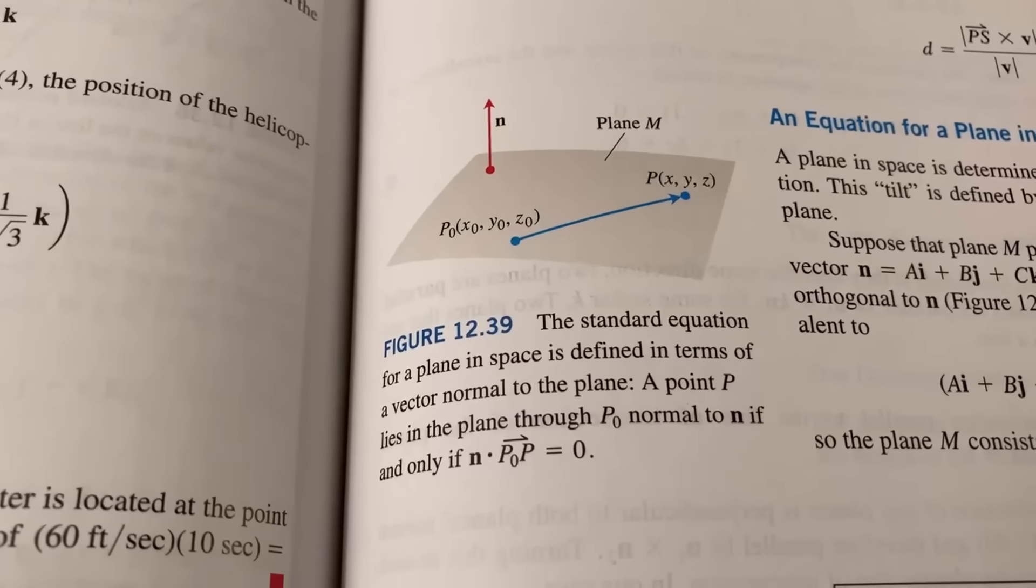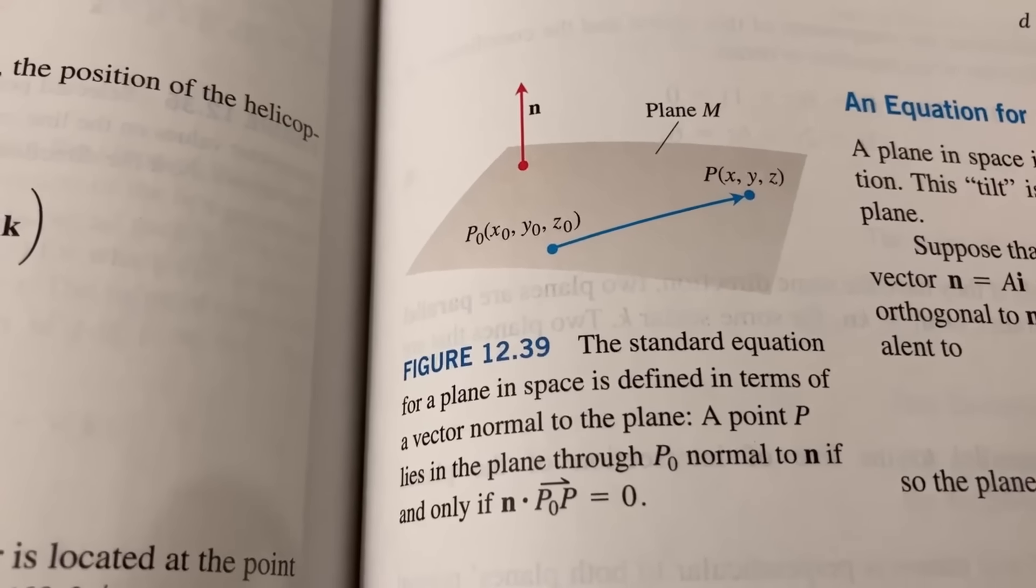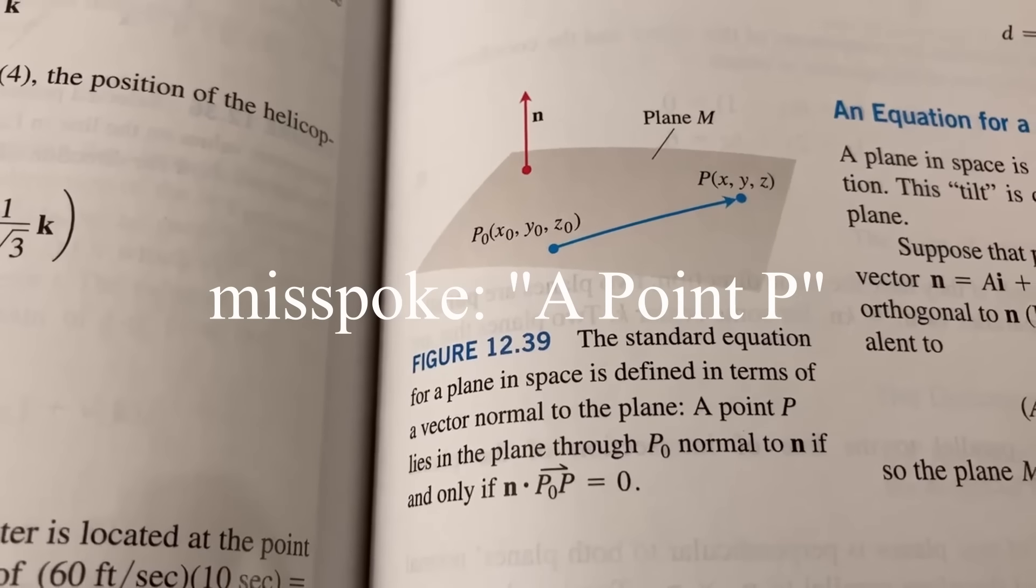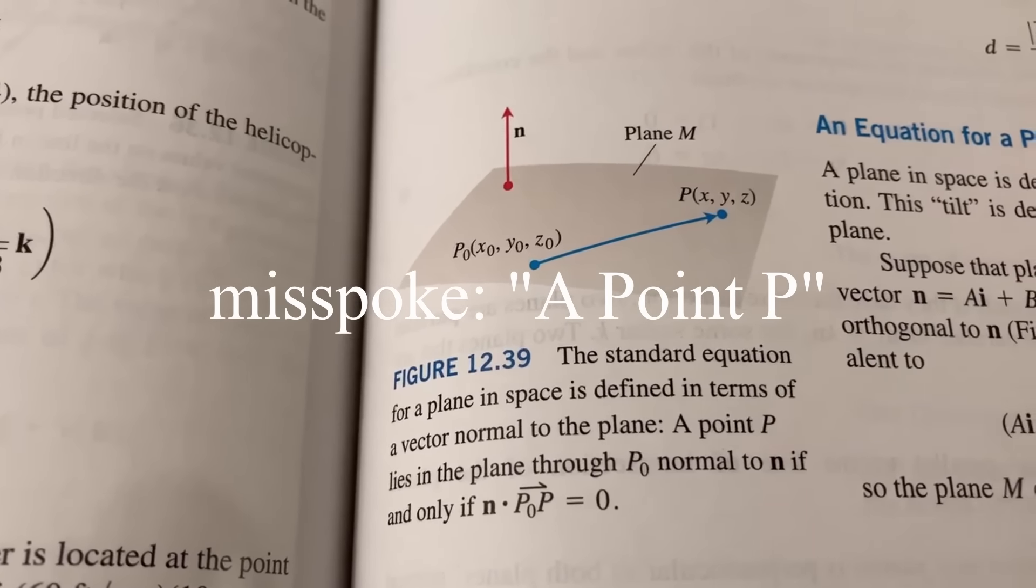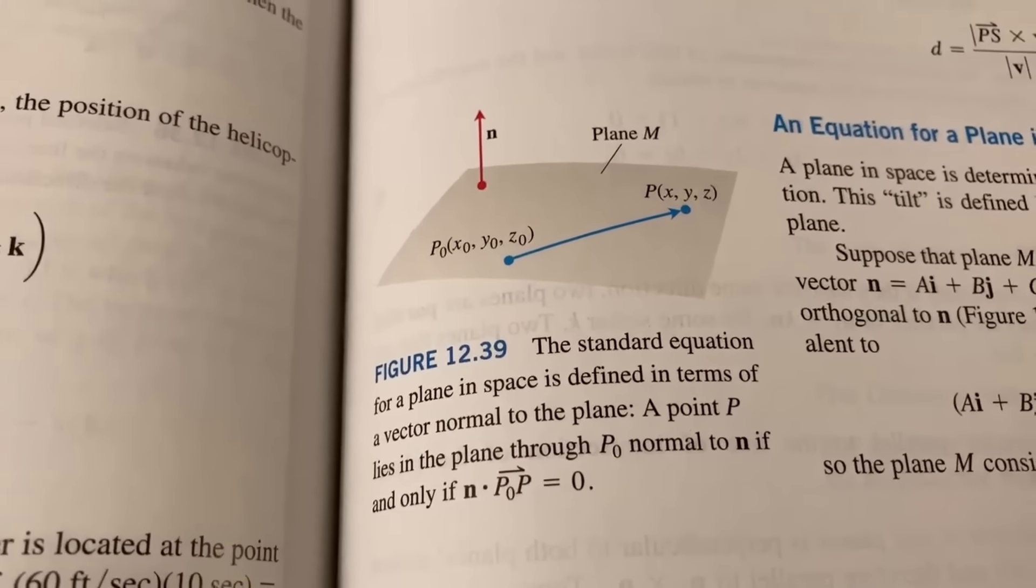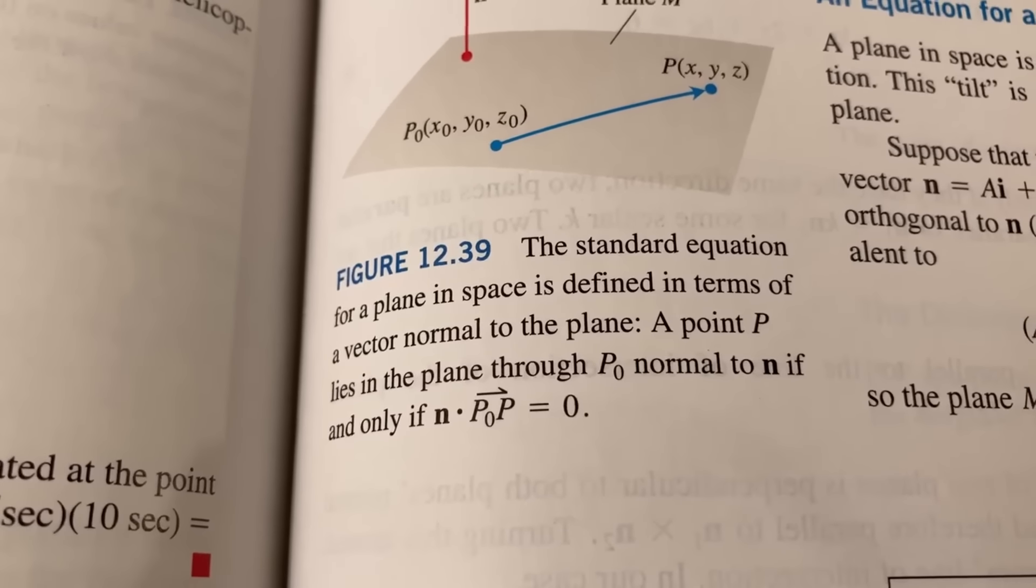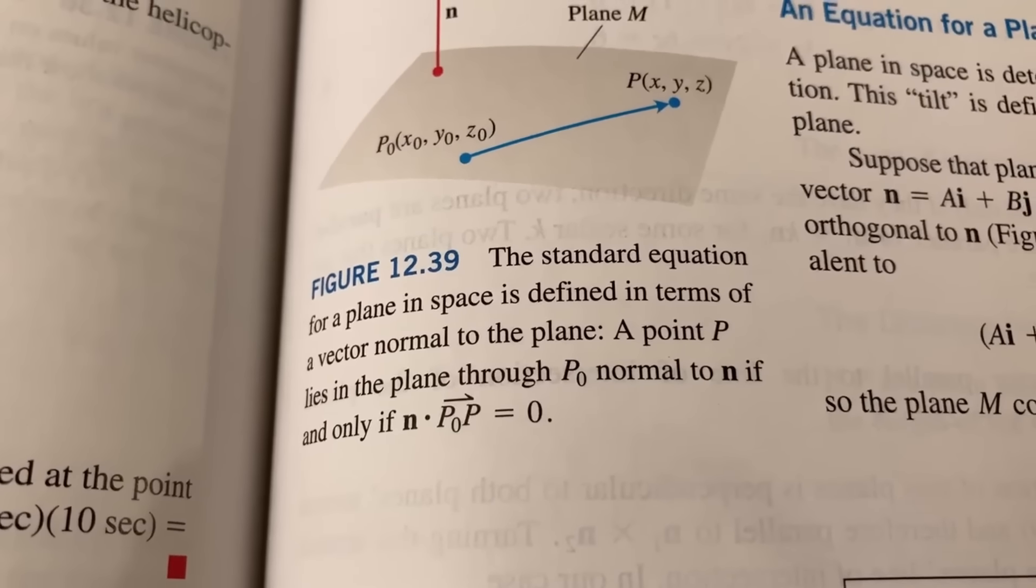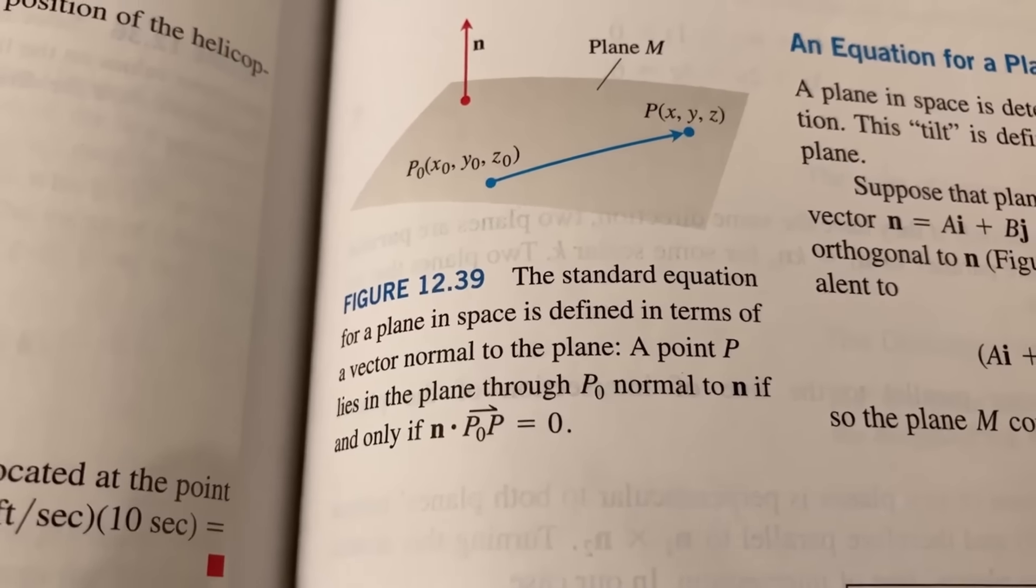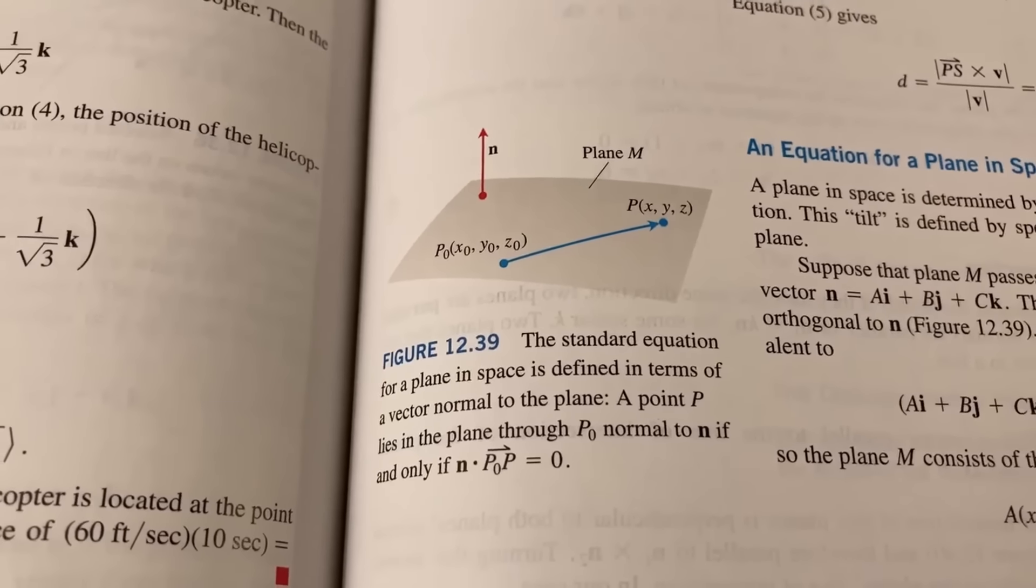Here's a really nice, simple little illustration in the book. This is on the equation of a plane. So basically, it's saying that a point, P-naught, will lie on the plane, if and only if, if you take the dot product of this blue vector with this red vector, and you get zero. Because that would mean that they are perpendicular vectors. And that's what it says there. It says, the standard equation for a plane in space is defined in terms of a vector normal to the plane. A point, P, lies in the plane through P-naught normal to N, if and only if. And they give you the condition there. So really, really cool, simple picture that helps explain a concept.